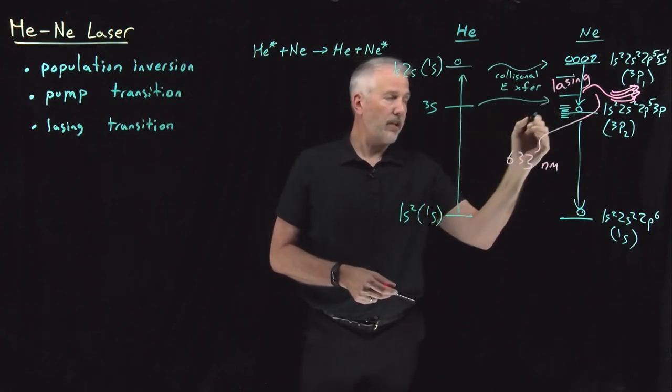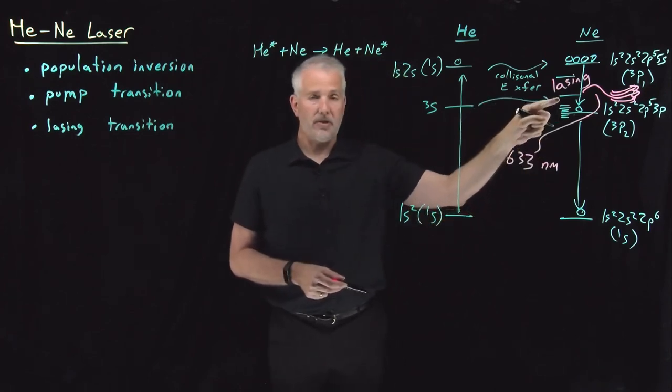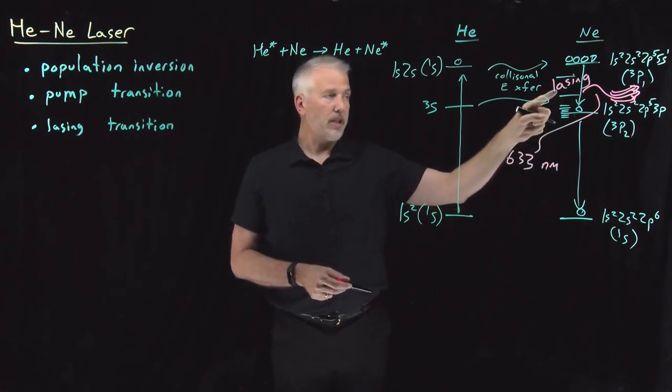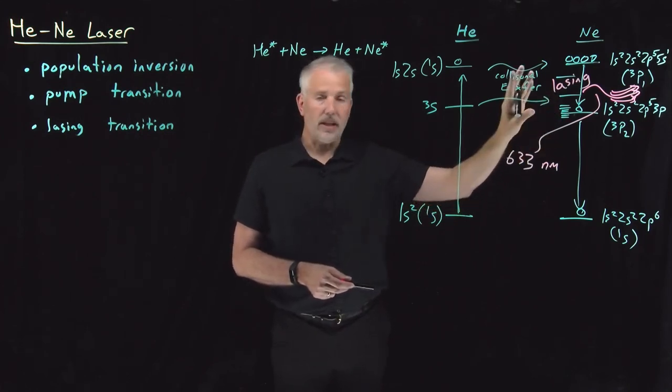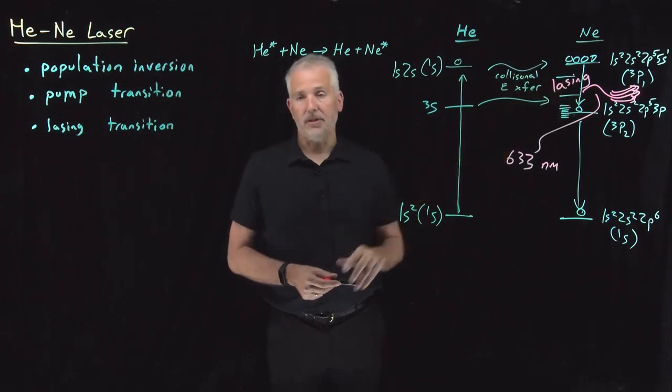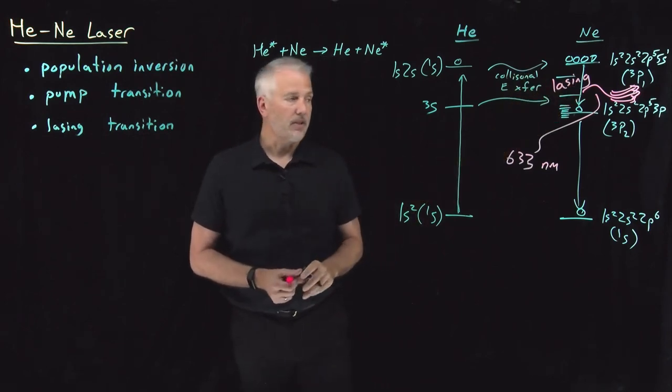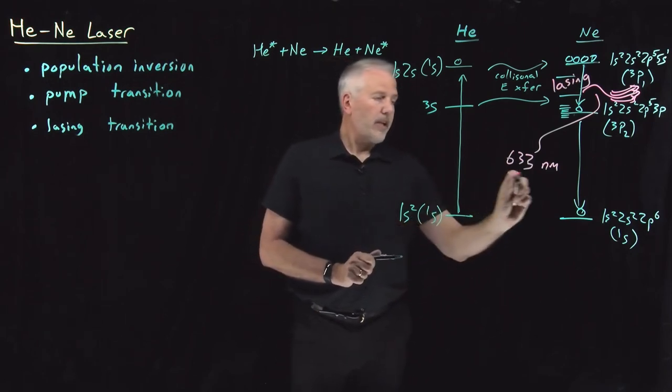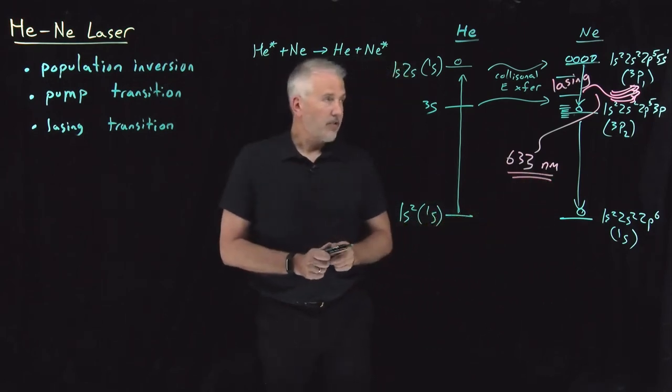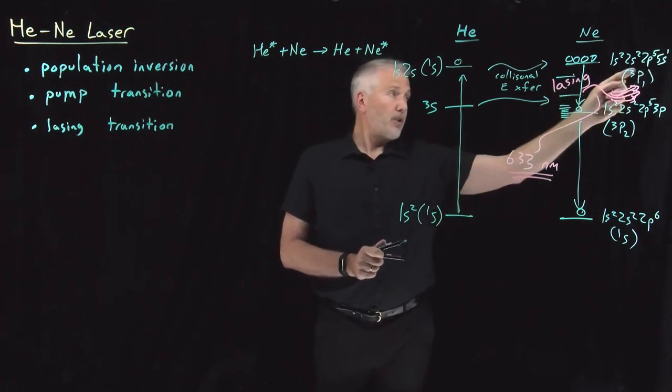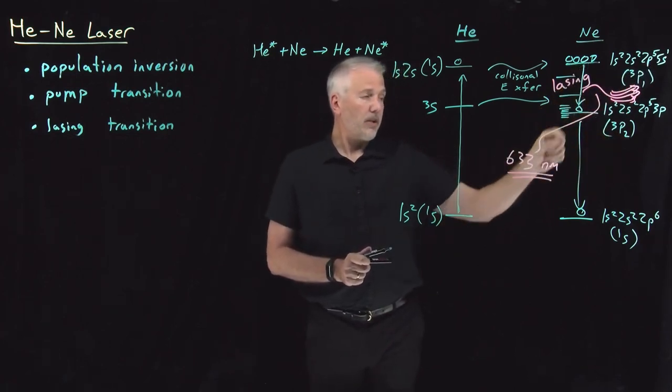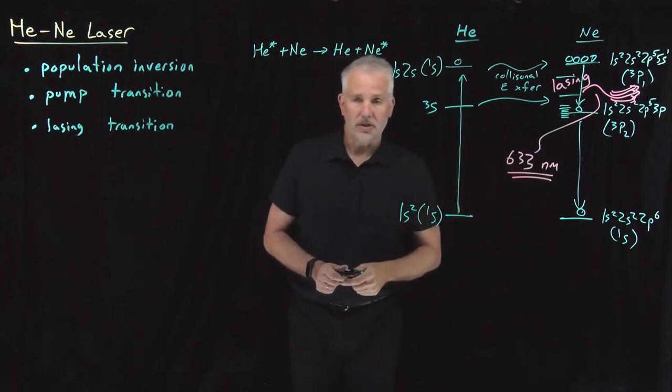So there's all sorts of other, if I collisionally transfer energy over to one of the other states and fall from a different excited state to a different lower state as the lasing transition, I can get light of various different frequencies to be emitted by this helium-neon laser. But the most common wavelength of light emitted by a helium-neon laser is between this pair of states, the triplet P1 state here and the triplet P2 state here that we use as our lasing transition.